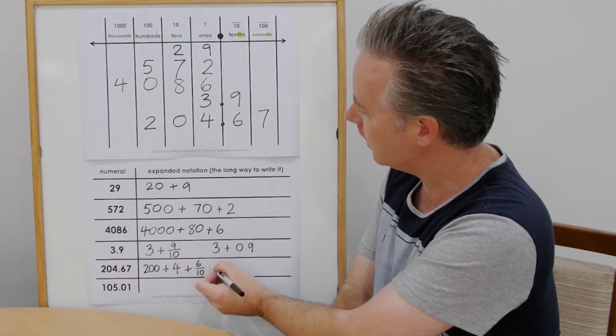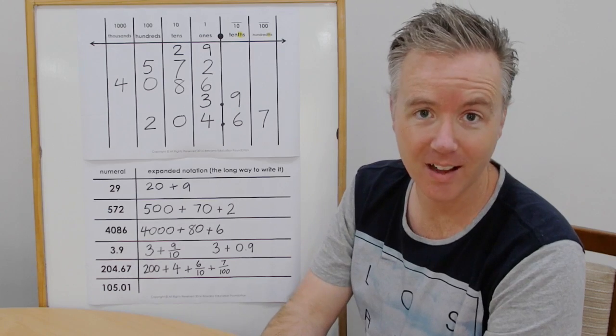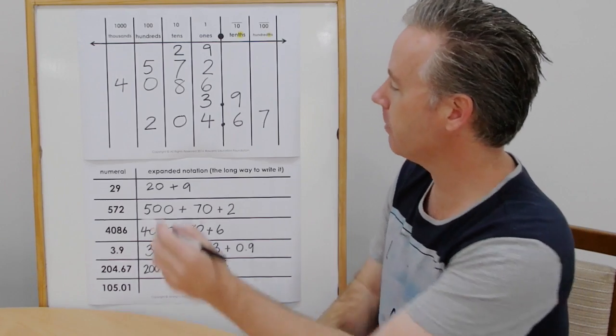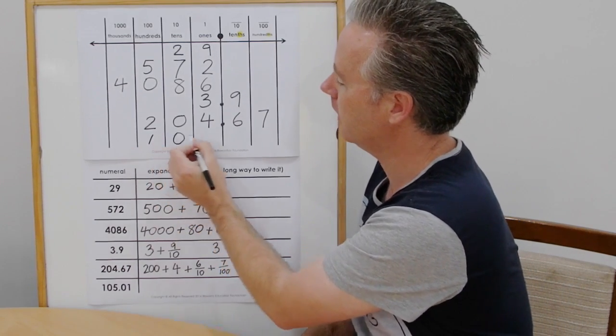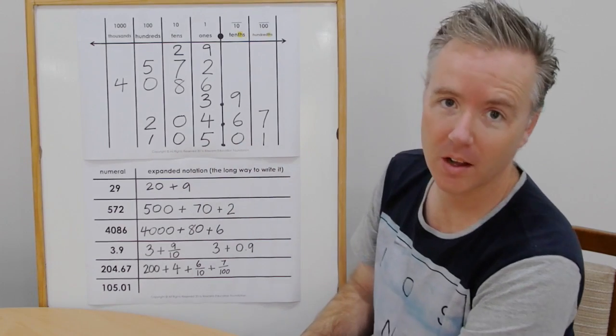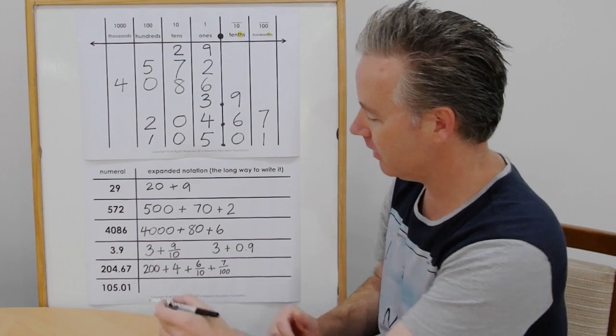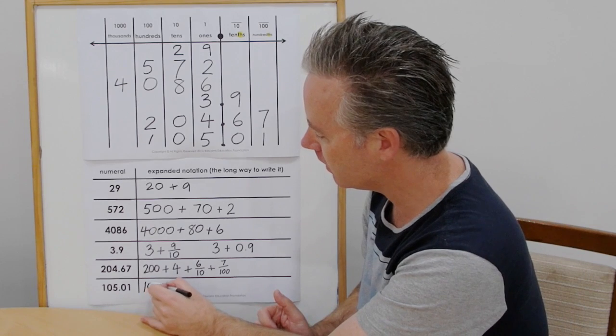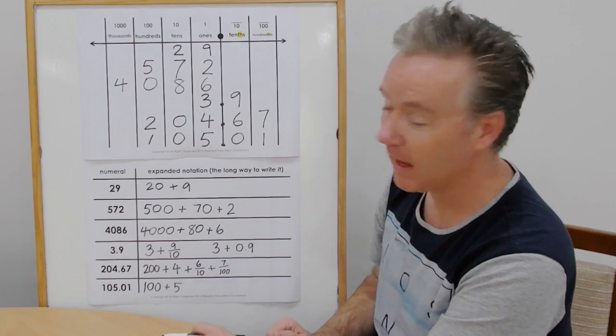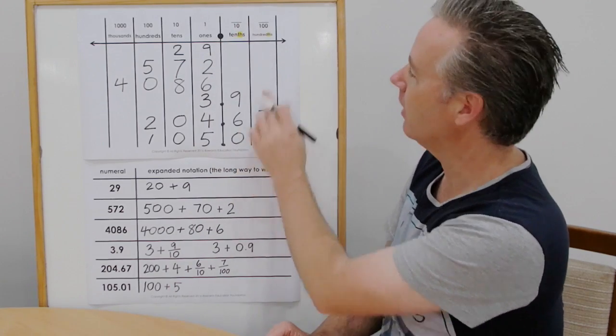Last one. One hundred and five and one-hundredth. Now let's write that out in expanded notation. You might want to actually pause now and have a go yourself and then check. We have one hundred plus our five ones. And now we don't have any tenths. We just have one-hundredth.